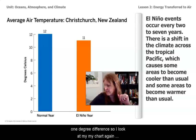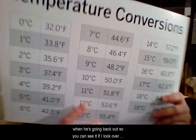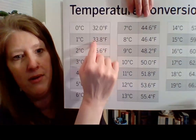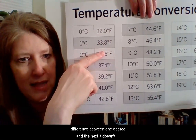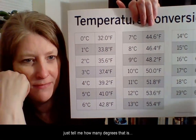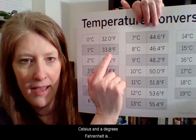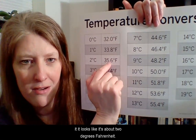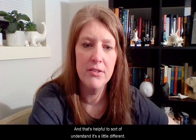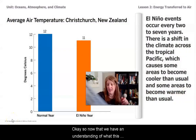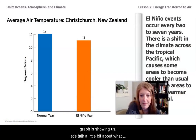So now we're talking about a one degree difference. If you look at the difference between one degree and the next on the conversion chart, you can see that the difference between one degree Celsius and one degree Fahrenheit is about two degrees Fahrenheit. That's helpful to understand. Now that we have an understanding of what this graph is showing us, let's talk a little bit about what that means for the energy.